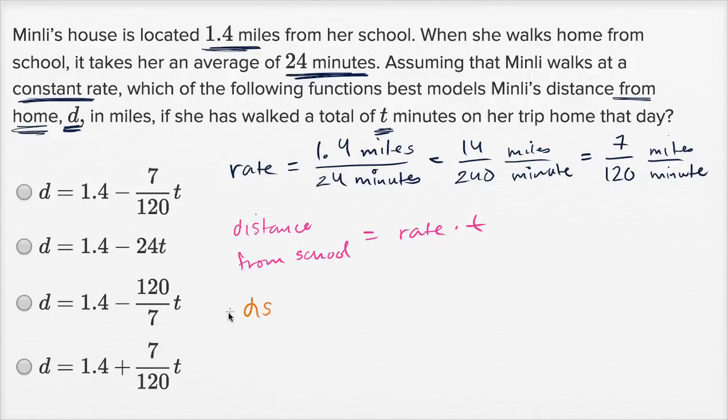So let me just write D, because this is what we care about. D, which is her distance in miles from home. That's going to be 1.4 minus distance from school.